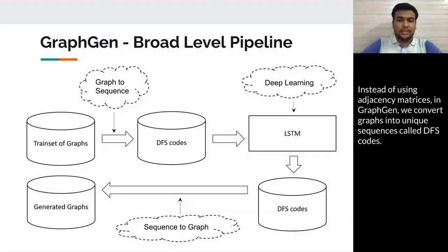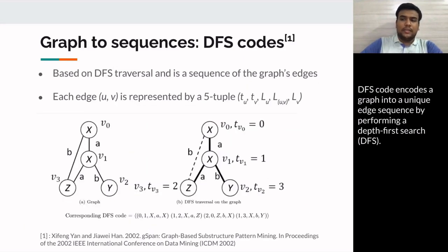Instead of using adjacency matrices, we convert graphs into unique sequences called DFS codes. DFS code encodes a graph into a unique sequence by performing a depth-first search.